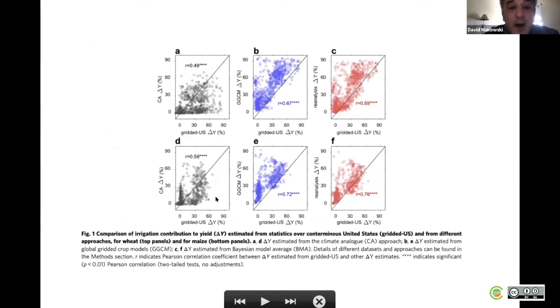This graphic shows the comparison of the three approaches, the three series of yield gap estimates. On the y-axis, you have the three series of estimates: climate analogue, the mean value of the ensemble of 10 crop models, and the outcome of the Bayesian model averaging procedure. On the x-axis, you have a test dataset coming from the United States, an independent series of yield gaps obtained for different regions across the United States that we use to evaluate and compare the performance of the three techniques.